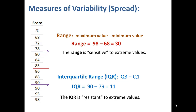The IQR is resistant to extreme values. It's calculated by taking the third quartile and subtracting the first quartile, and those values are buffered from the extreme ends of the data.